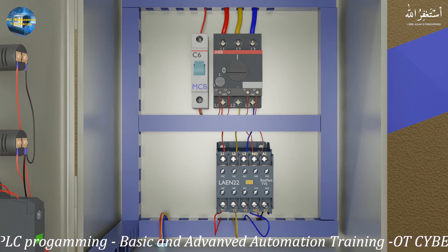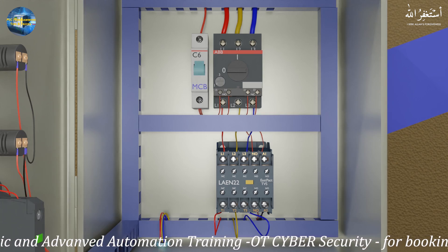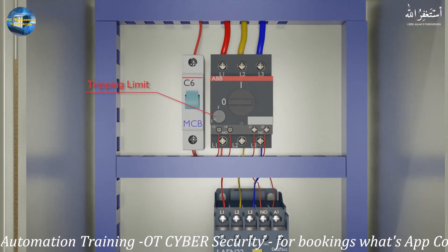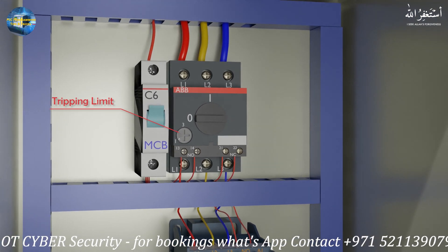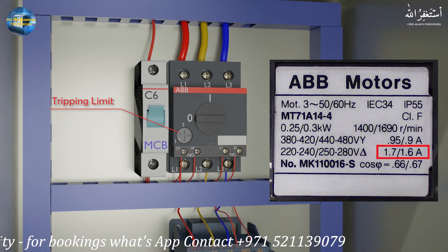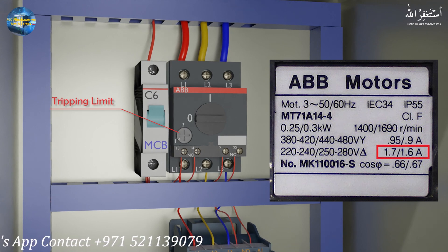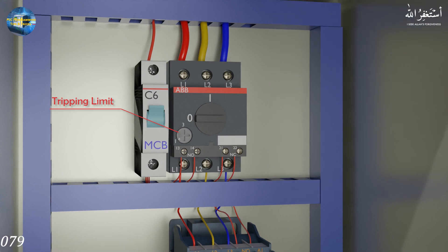First, we can check the motor nameplate and verify the rated amps of the motor. We have to confirm that the tripping limit in the motor protector breaker is set as per the motor nameplate. In our case, the motor rated current is 1.6 amps, so we can set the current limit by rotating this knob using a screwdriver.